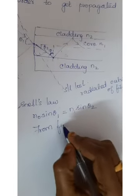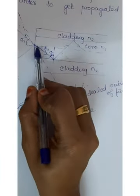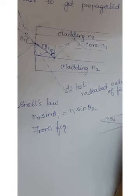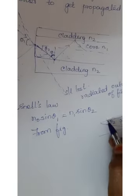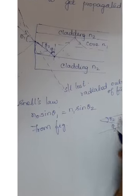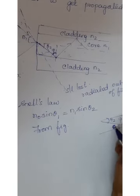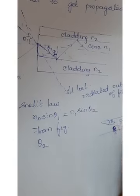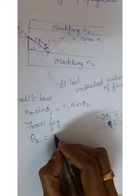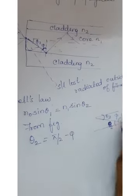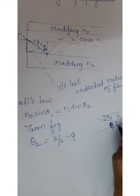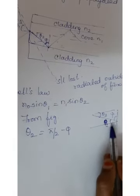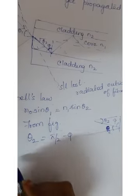From the figure, the angles form a Z-shape. Here the angle is theta2 and there the angle is phi, and these two alternate angles are equal. So from the figure, theta2 equals 90 degrees minus phi. This is because the critical angle corresponds to 90 degrees, so theta2 equals 90 minus phi. Take this as equation number 2.